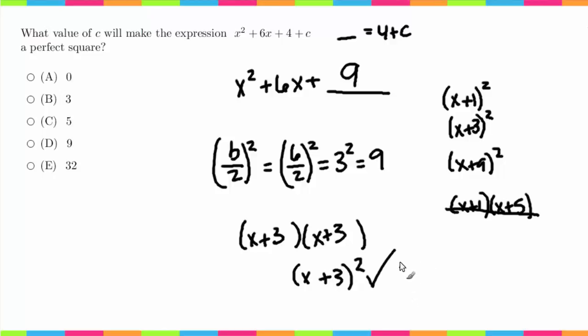So going back to the question, we have this 9 here. So 9 would equal 4 + C, so that means C would equal 5. That's the only thing you have to remember in this: just don't forget to go back to that because you do have this 4 + C here.